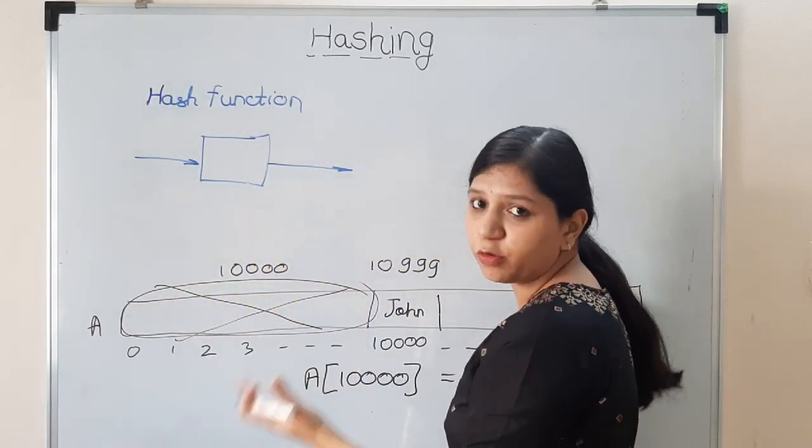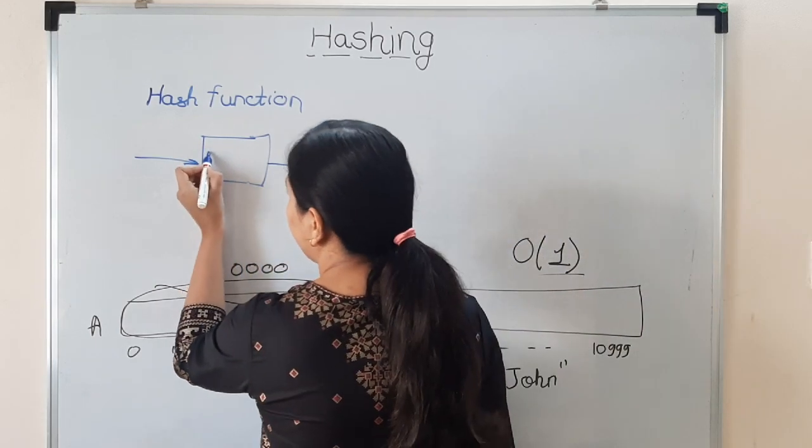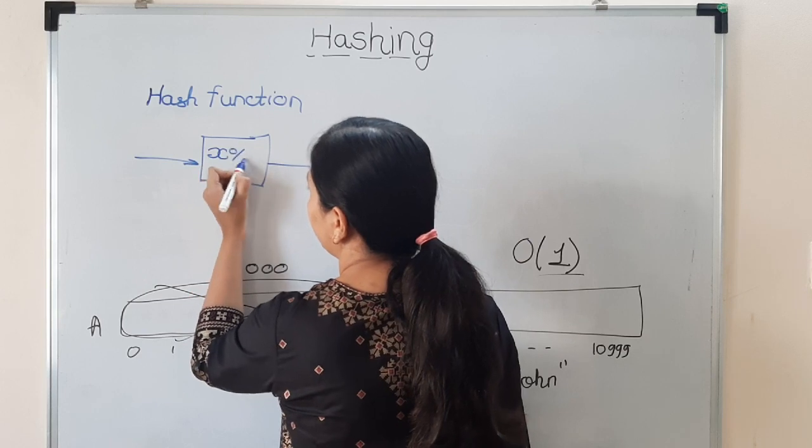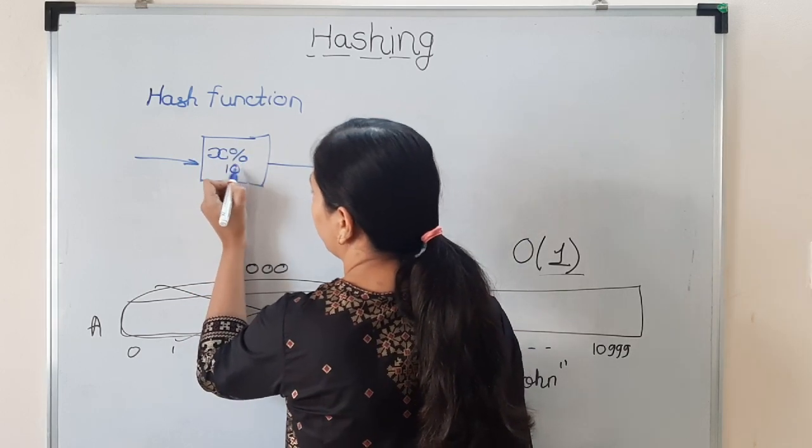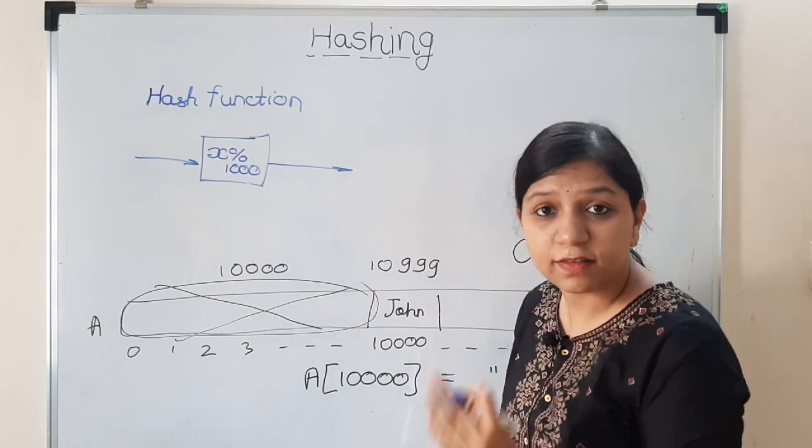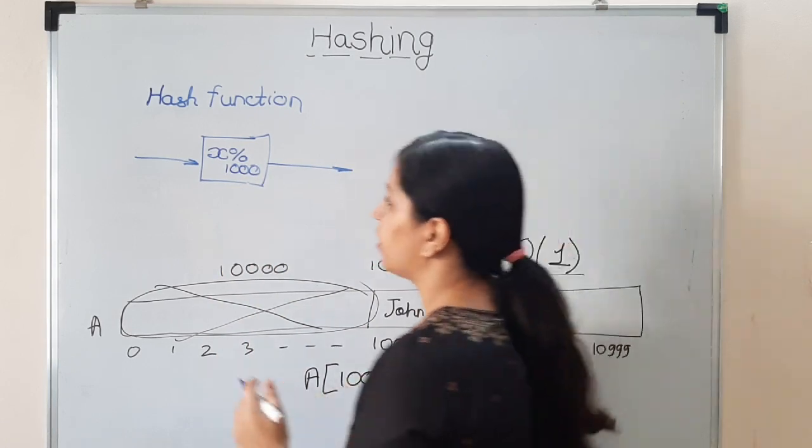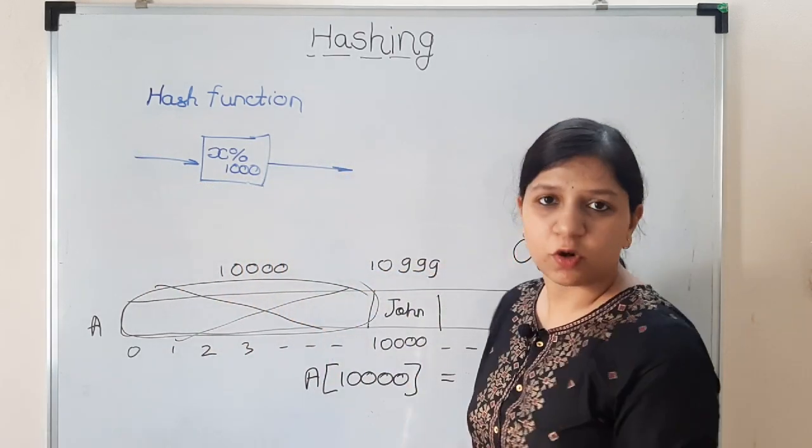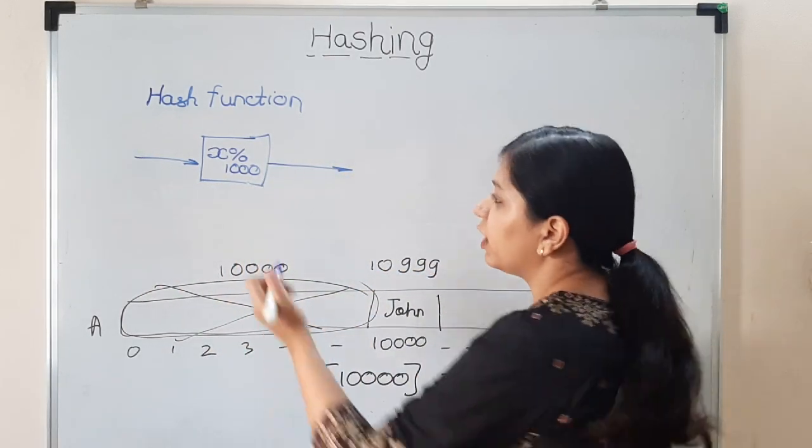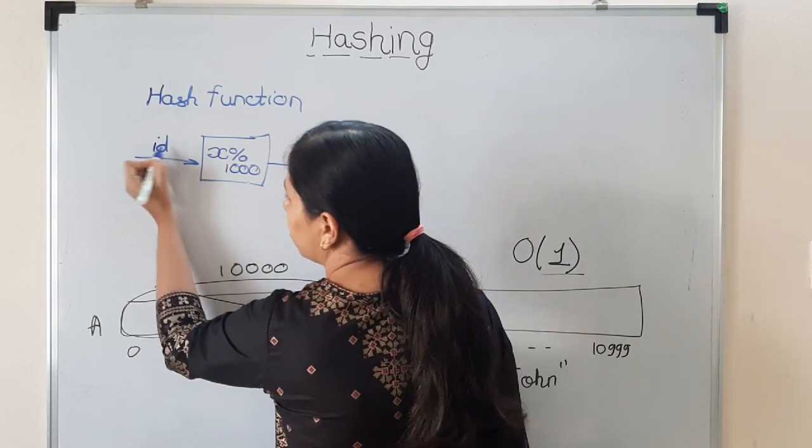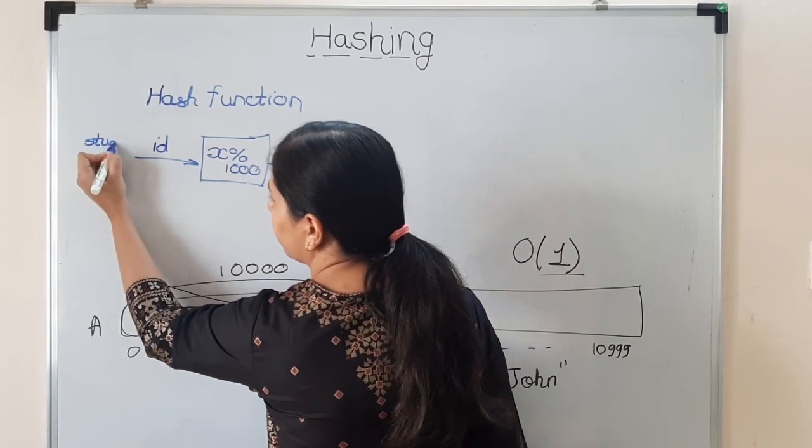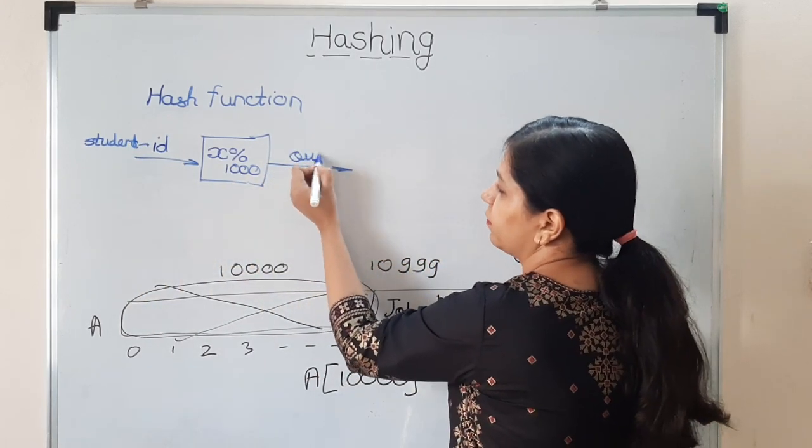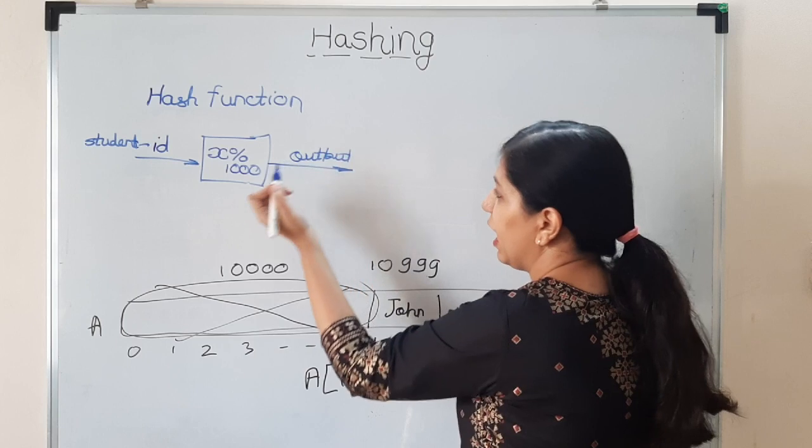How can we do it? Here comes hash function in the picture. So what is hash function? We give some input and we get some output. Function - let's say it is whatever you are giving to it: x modulo 1000. Let's say this is your hash function. So if you give it x, it is going to give you x modulo 1000. We give it ID - student's ID.